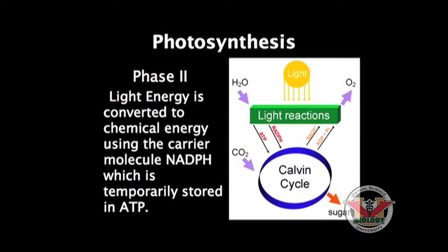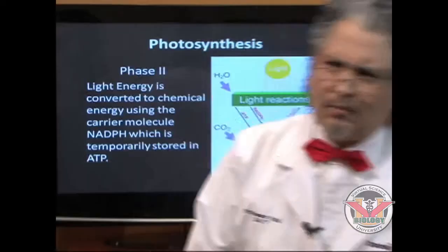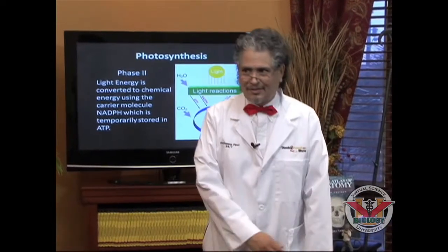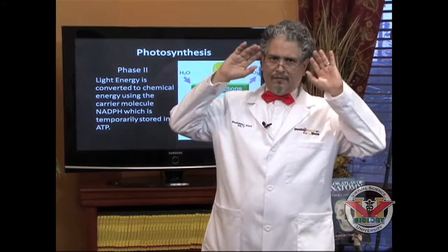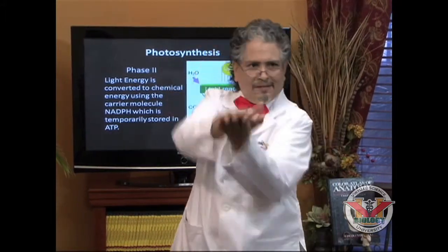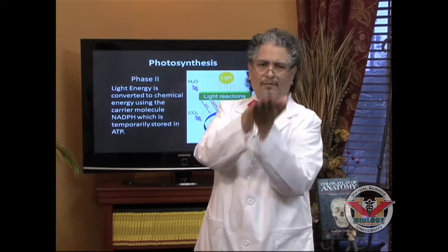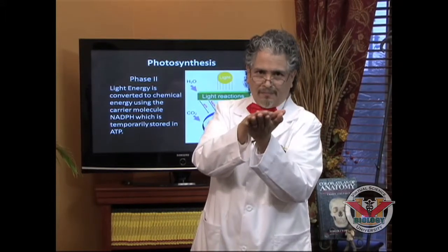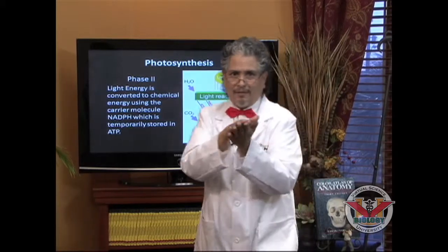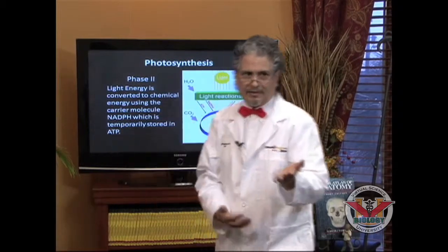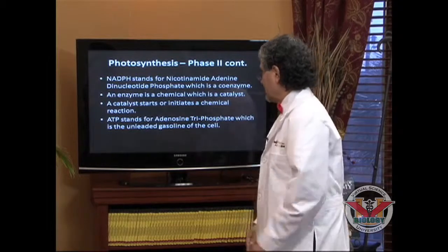And then in phase two, light energy is converted to chemical energy using the carrier molecule NADPH, which is temporarily stored in ATP. You're probably going to say, what in the world is NADPH? For the sake of keeping it simple, all I want you to remember is that it's a carrier molecule that carries electrons that's going to be stored in ATP for the purpose of making glucose.